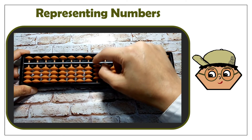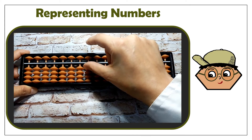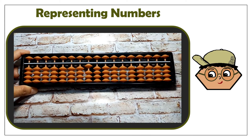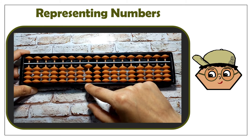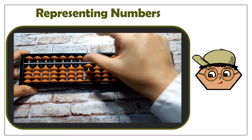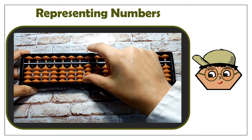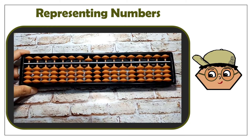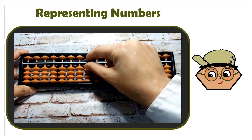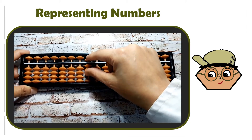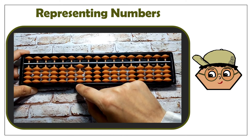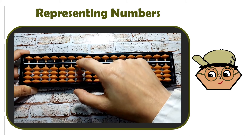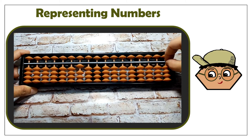To make 10, you reset the unit's rod and move 1 bead up on the 10th rod. So this is 10, 20, 30, 40, 50, 60, 70, 80, 90. And to make 100, you move to the 100th rod. Now let's reset.